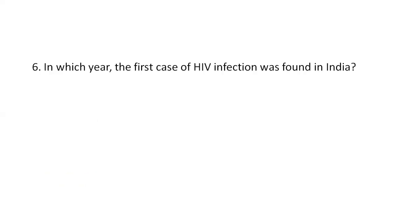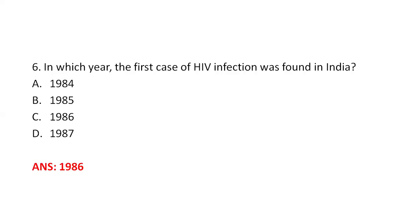Next question: In which year was the first case of HIV infection found in India? Option A, 1984. Option B, 1985. Option C, 1986. Option D, 1987. The right answer is Option C, 1986. The first case of HIV infection in India was found in female sex workers in Chennai, and in the same year the first AIDS patient was found in Mumbai.